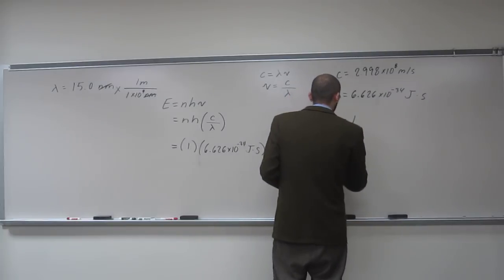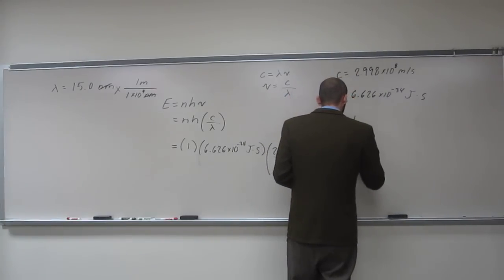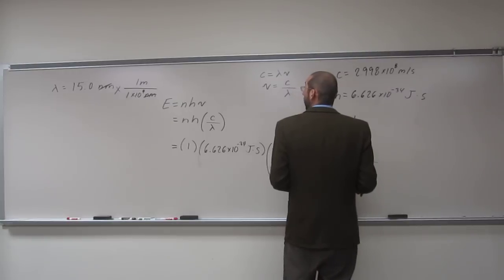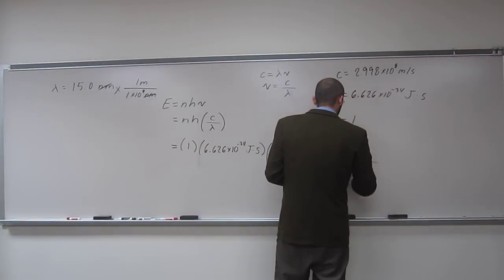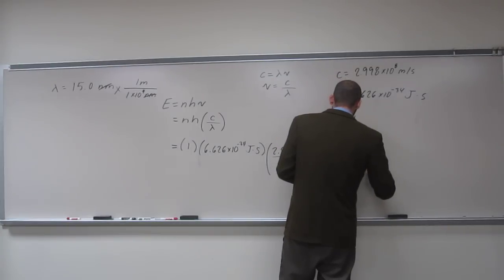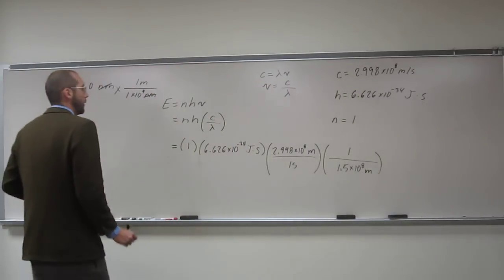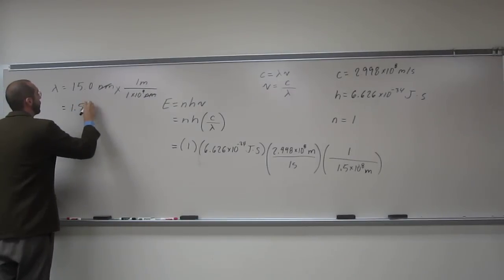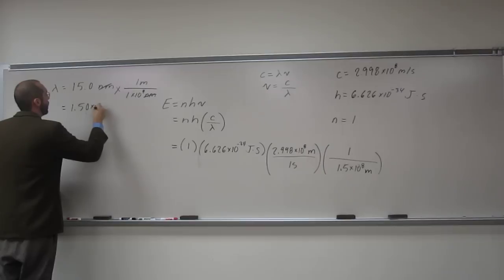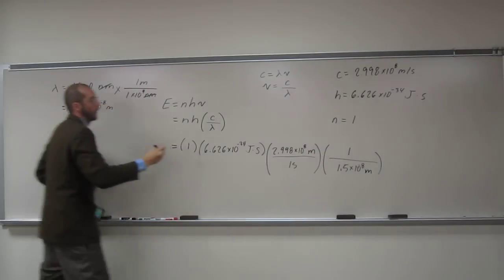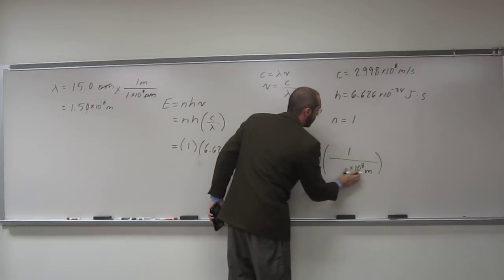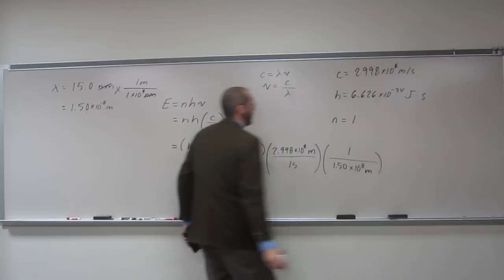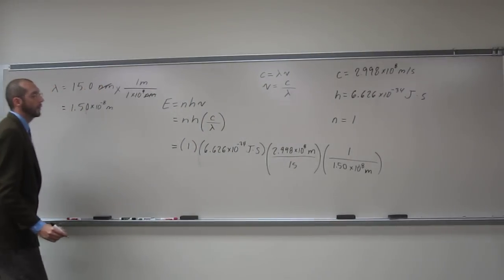And then 1 over lambda, 1.5, and then it's negative. So if we look here, we'll cancel the seconds there, the meters there, and we get joules for our units.